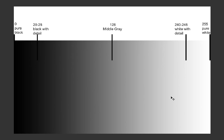So what is Tonal Range? Whenever we click an image in the camera, it stores data in levels. For a JPEG 8-bit image, there are 0 to 255 levels. This gradient goes from black to white, with a value of 0 to 255. The center point is called middle gray, and there is maximum detail at this point.